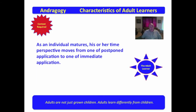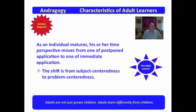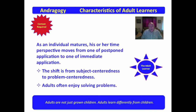As an individual matures, his or her time perspective moves from one of postponed application to one of immediate application. A child is learning something they may use one day; an adult is very much interested in how they can use this right now. Because of that, the shift centers from subject-centeredness to problem-centeredness. Adults are problem-solvers — they want to learn something if it helps them solve problems in the immediate time frame. Many adults will learn things they perceive will help them solve problems just because they enjoy solving problems.